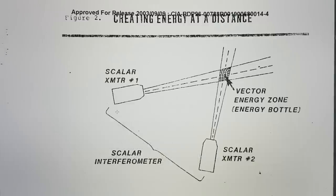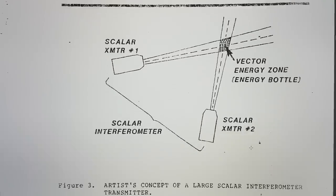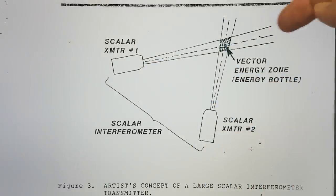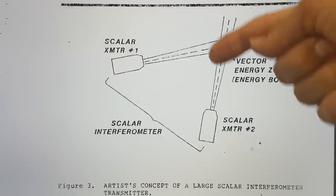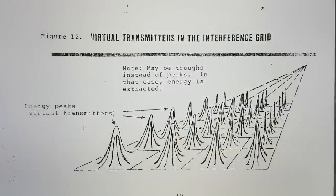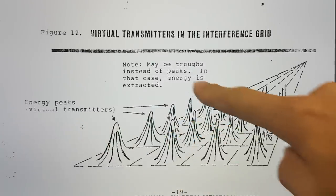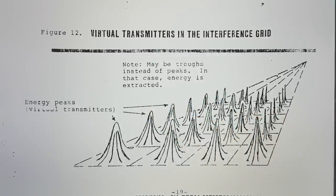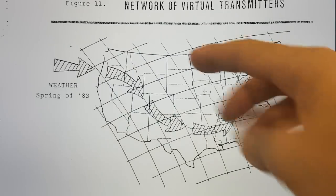This is a classic image from this document. This is about having a scalar wave transmitter here, scalar wave transmitter here, and then you have an interferometer zone here in the middle where you have an energy bottle and you can do various things with that bottle. You can pump energy in and you can pump energy out on absolutely incredible scales. Here it's saying you have energy peaks, and if there are troughs, maybe troughs instead of peaks, in that case energy is extracted.